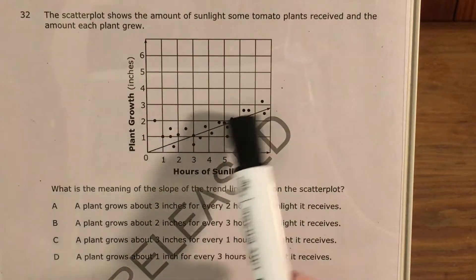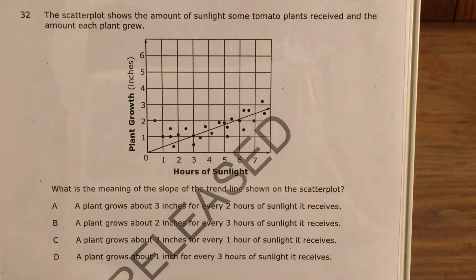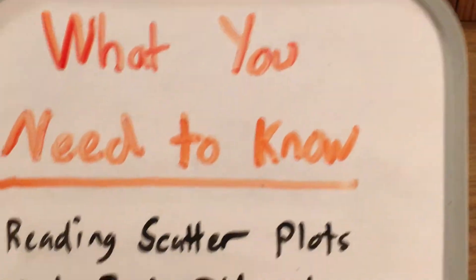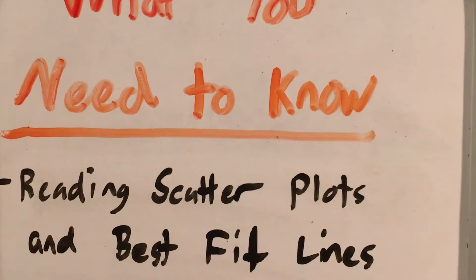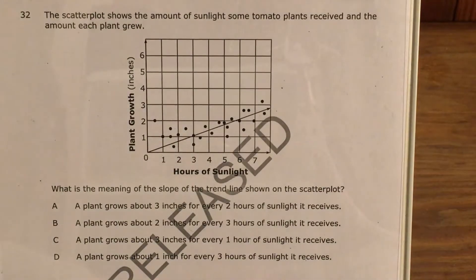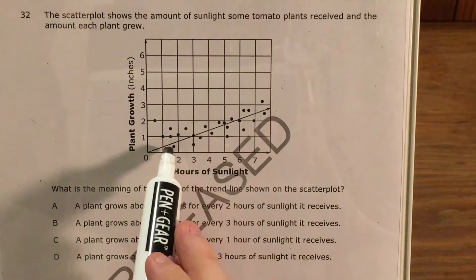And we're supposed to interpret the slope of this trend line. So in order to do a question like this, you'll need to know how to read scatter plots and best fit lines. Specifically, we're looking at slope this time. So let's take a look at this scatter plot.